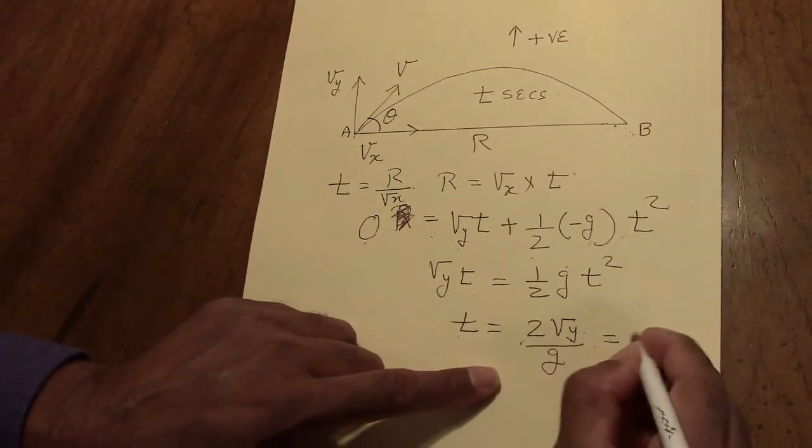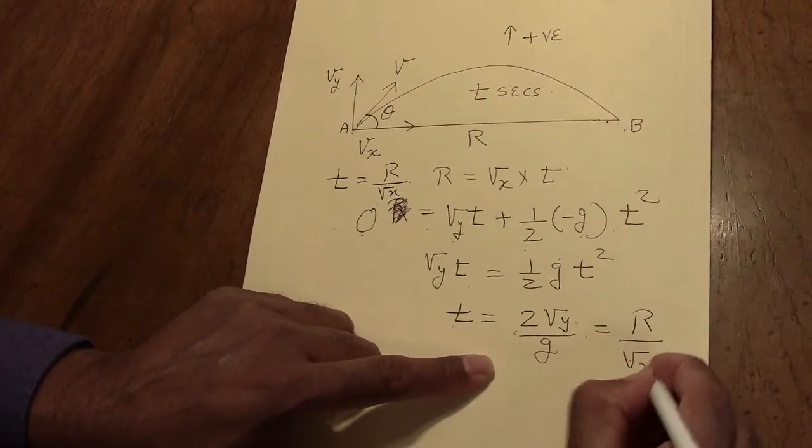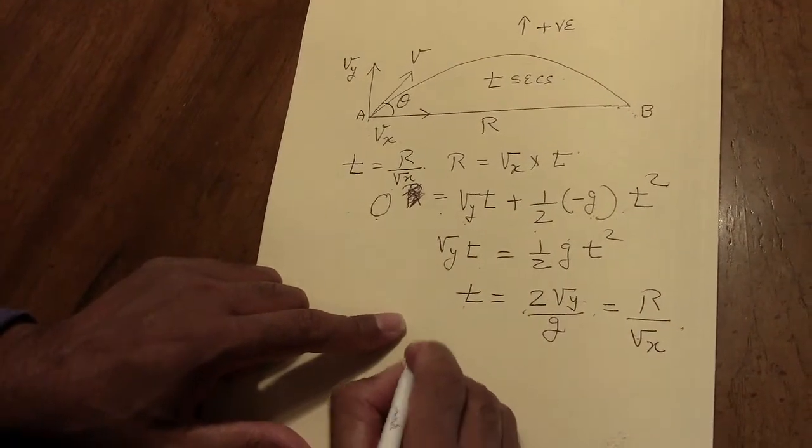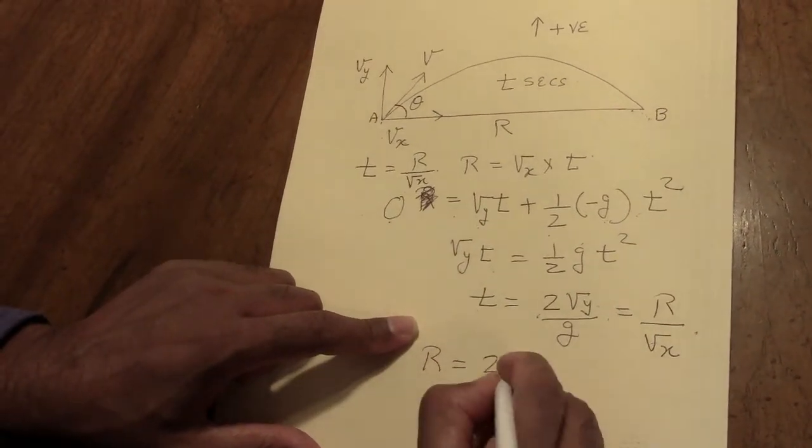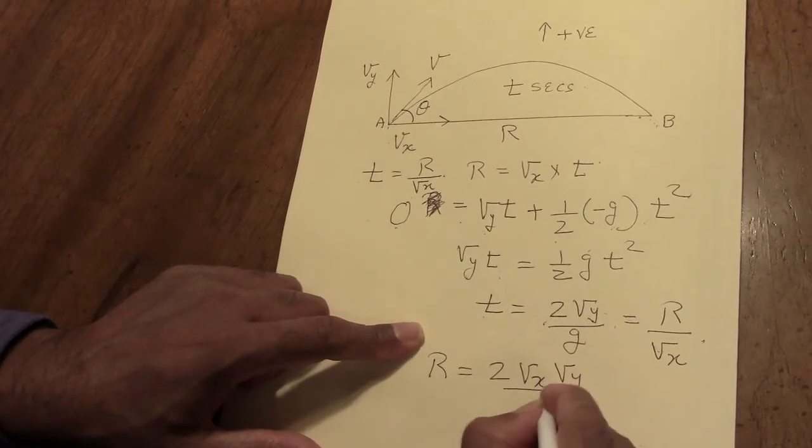All of these terms being equal, we can write it like this, from which, moving the terms, we get that the range is 2 Vx Vy over g.